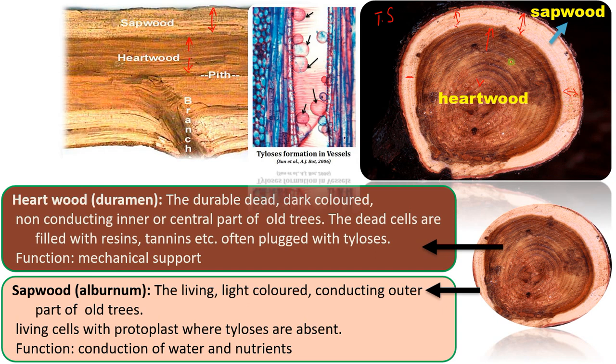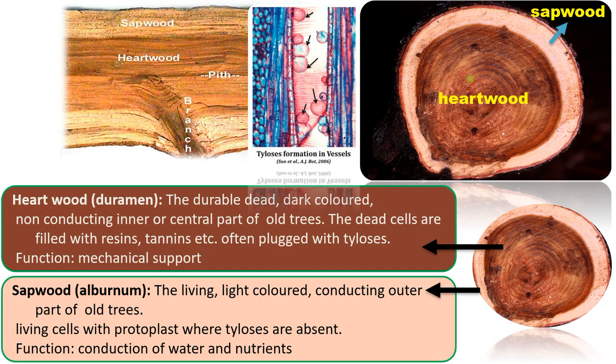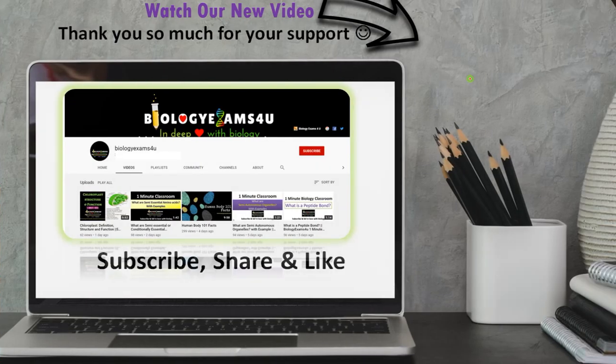So we use heartwood or durable wood for making furniture. Hope you understand the difference between sapwood and heartwood. Thank you so much for your support. You are with biologyexams4u.com.